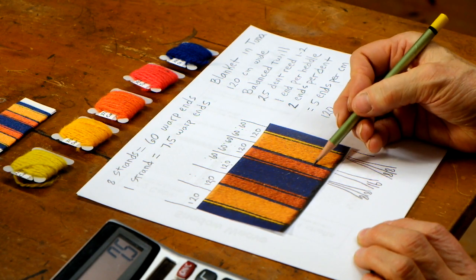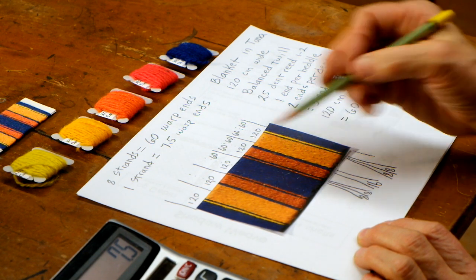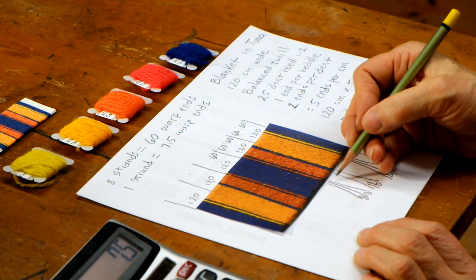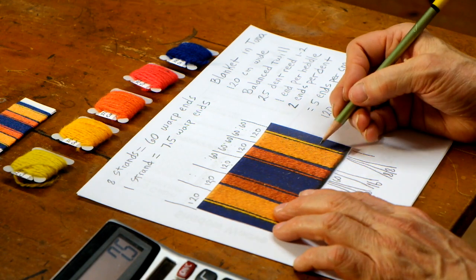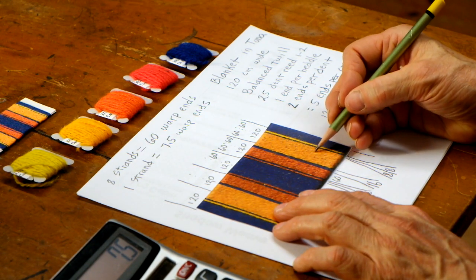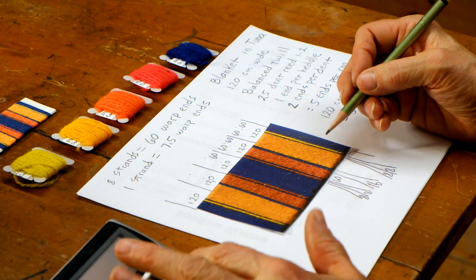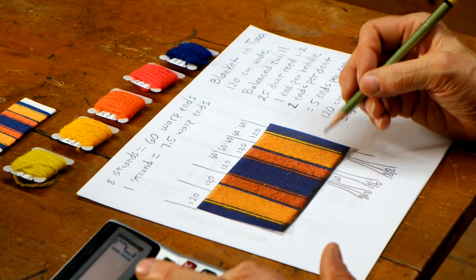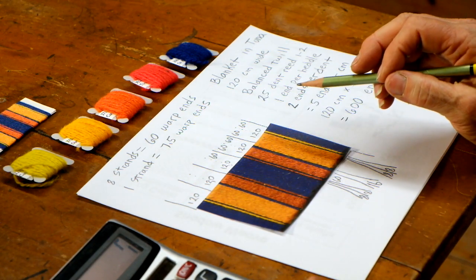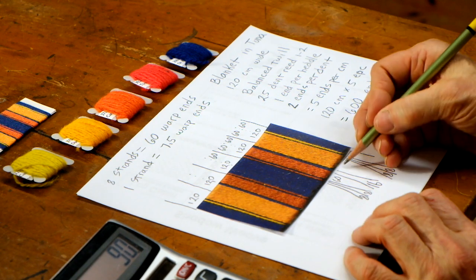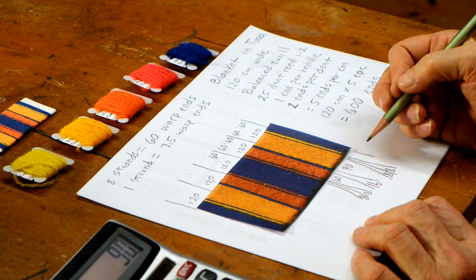And now we can count one, two, three, four, five, six, seven, eight strands in this orange stripe. We know that eight strands is 60 warp ends. So that'll be 60. Then we can count these. One, two, three, four, five, six, seven, eight, nine, ten, eleven, twelve. So we're going to take 12 and multiply by 7.5. And we get 90. So 12 strands of yarn is going to be 90 threads.